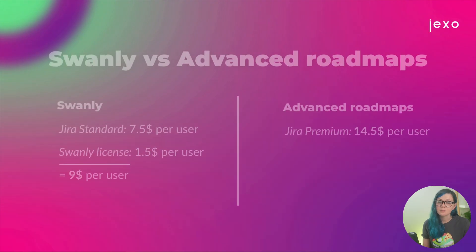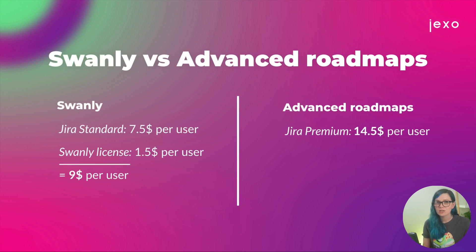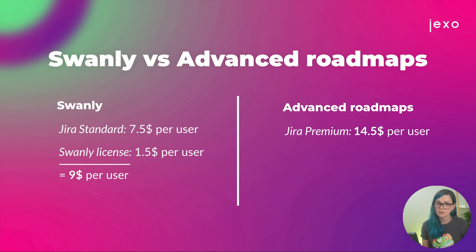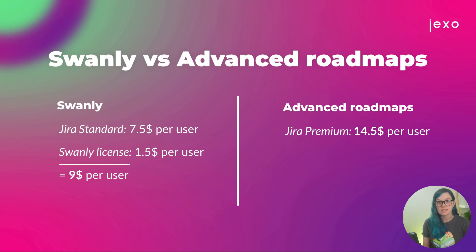So what are the key differences between Swanly and advanced roadmaps? We get this question quite a lot. You can achieve almost the same results using either tool — they're both made for project management. However, there are two key differentiators. First, Swanly is much cheaper and simpler. Advanced roadmaps are available on Jira Premium, which costs $13.50 per user, as opposed to $7.50 per user for Jira Standard. If you'd be switching to Jira Premium only to get cross-project roadmaps, that would be quite expensive. Swanly starts at $1.50 per user, gets cheaper after 200 users, and is completely free for up to 10 users.